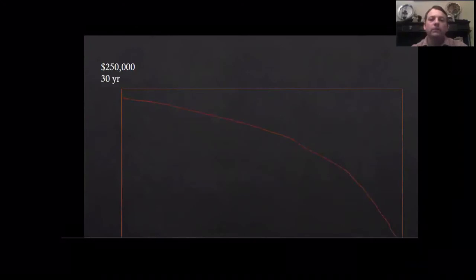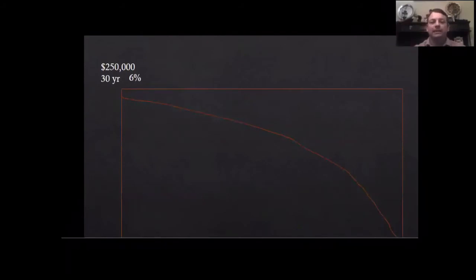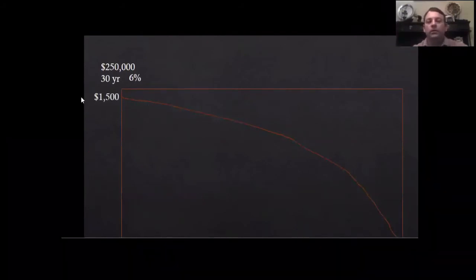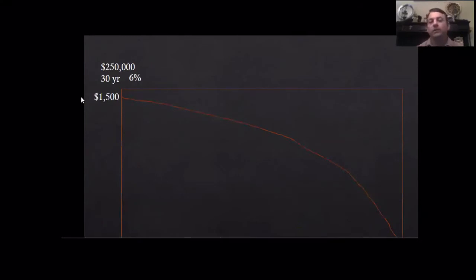We're going to use an average house. These numbers may seem low or high depending on where you are, but I'm using average numbers I'm used to seeing. Let's say a $250,000 house. We're going to build this box representing a mortgage over time, broken up over 30 years at 6% interest. If we run the calculations, it would have about a $1,500 a month payment.